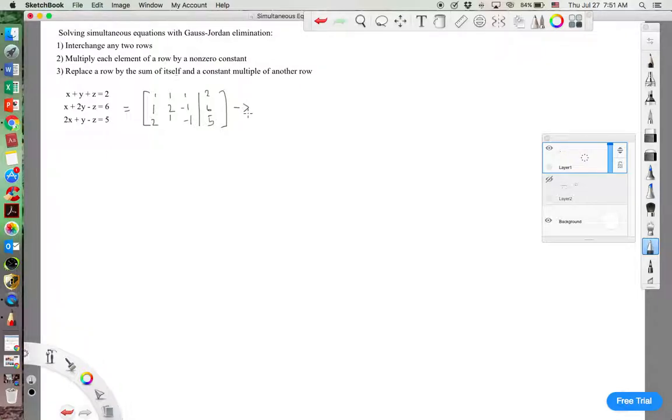First, I want to subtract r1 from r2. And I'm also going to subtract from r3 2 times r1. And we get the first row is the same, 1 1 1. And then r2 minus r1, so 1 minus 1 is 0, 2 minus 1 is 1, negative 1 minus 1 is negative 2.